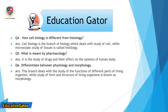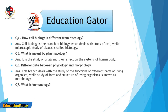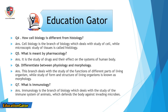Question number 6: Differentiate between physiology and morphology. Ans. Physiology is the branch that deals with the study of the functions of different parts of living organisms, while the study of form and structure of living organisms is known as morphology.